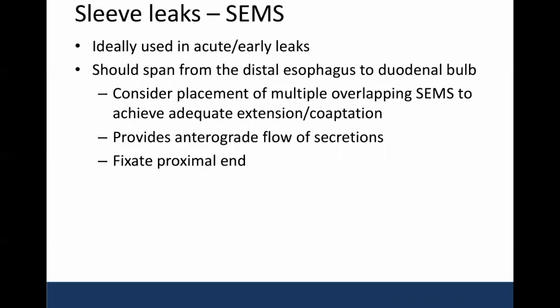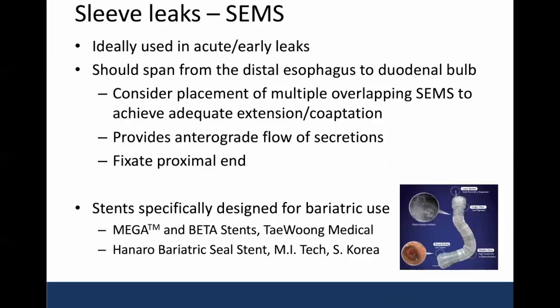Esophageal stents are often used in early or acute leaks, but it's very important for these to span from the distal esophagus to the duodenal bulb. Oftentimes we're considering placement of multiple overlapping stents to achieve adequate extension or coaptation of the wall. This really allows for antegrade flow of secretions. It's also important to think about fixating the proximal portion of these stents to the esophageal wall to prevent migration. There are a variety of other stents being designed around the world that are truly specific for bariatric use, and hopefully the FDA will approve some of these for use within the U.S. in the coming weeks or months.